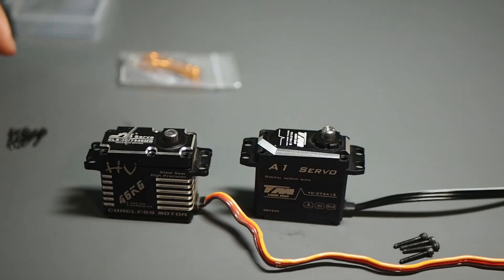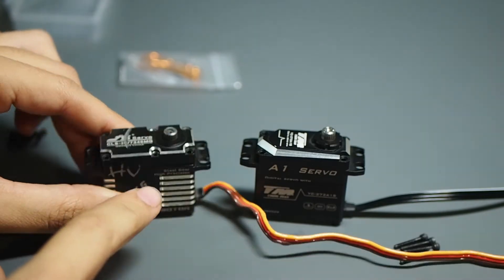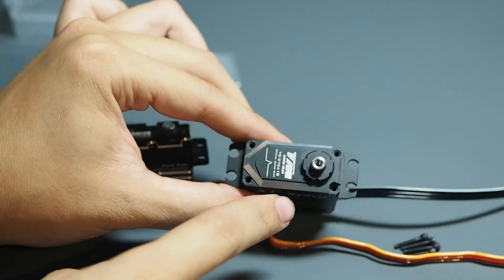So first impressions after taking off the screws. The JX servo only had Loctite on about three out of six screws. This one had Loctite on all four screws.